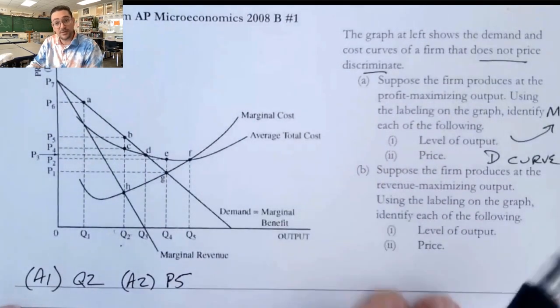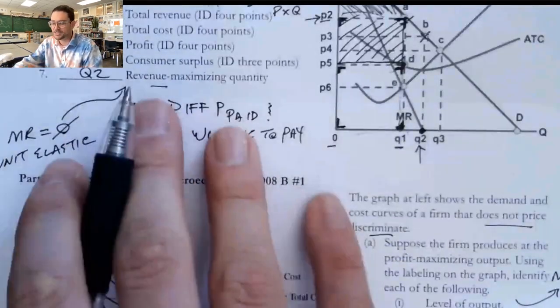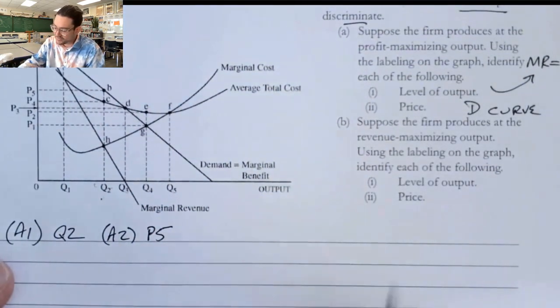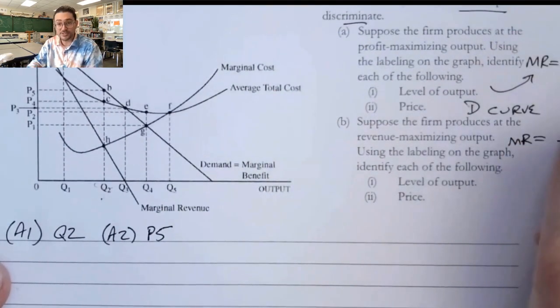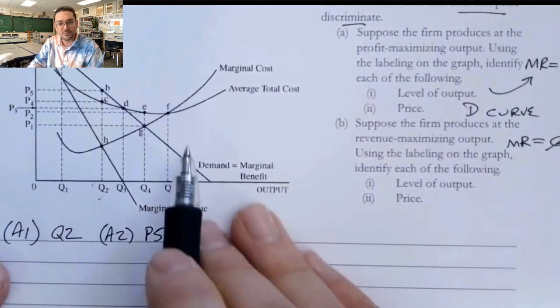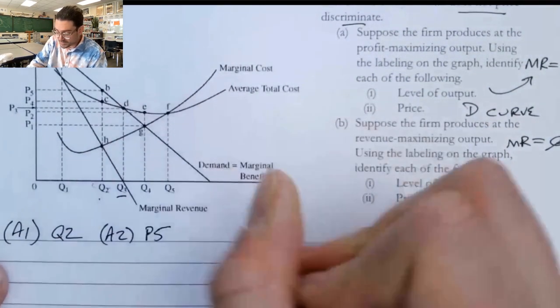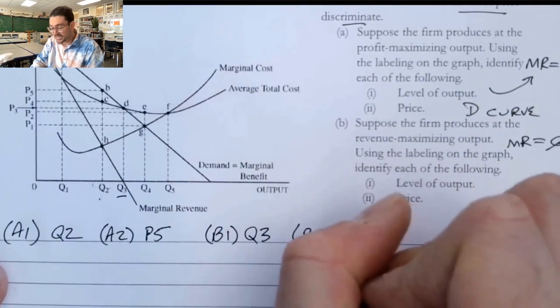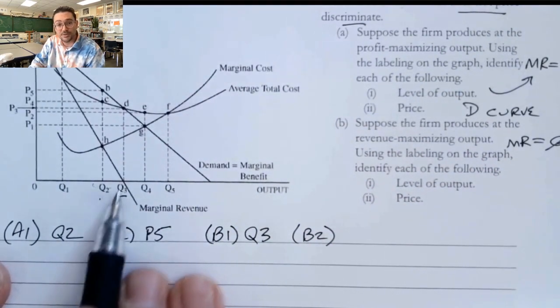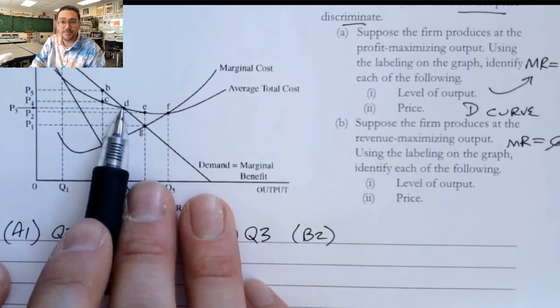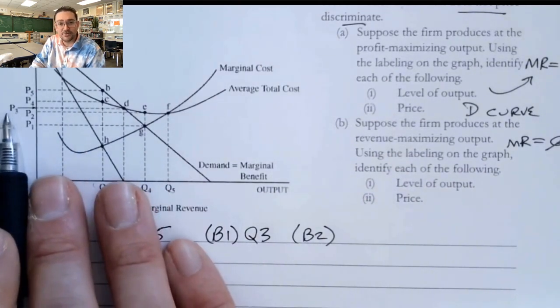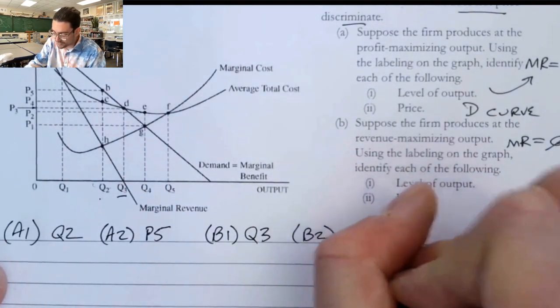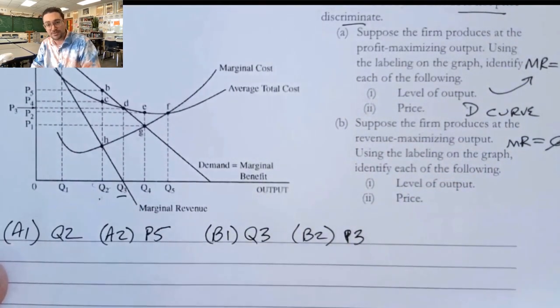Now the last part says revenue maximizing. And that's why I included this question up here is because sometimes the AP people get cute with this. They throw in a question from a previous unit. So if we know that this occurs where MR equals zero, and we just talked about that, we can see that the marginal revenue curve crosses here at Q3. So B1, we're going to say, is Q3. Now, if we were to produce that quantity, Q3, what would be the price that we would charge? We'll go up here to the demand curve. We see that happens at part D. And that's a really tiny little arrow right there, but it's telling you that point D is at P3. And so if they were to want to revenue maximize, they would produce Q3 units at price P3.